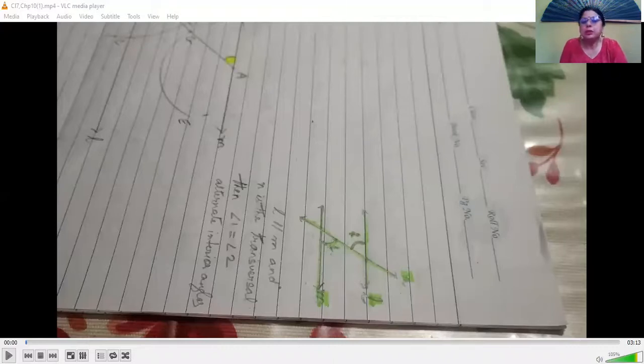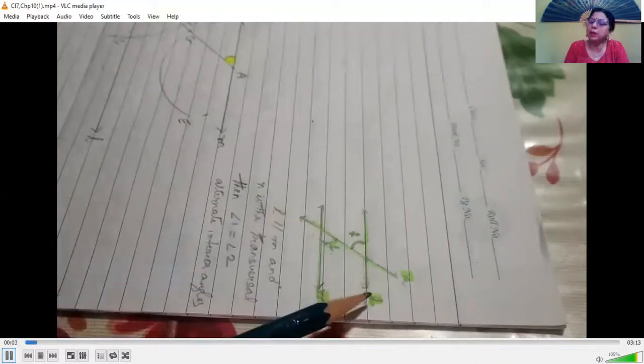Now I'll be showing you this method. Parallel lines can be constructed using two concepts. We know when two lines are parallel, then the alternate interior angles are equal and the corresponding angles are also equal.